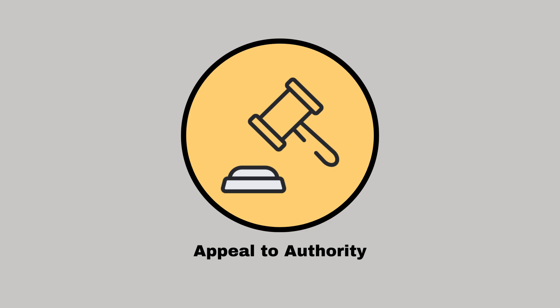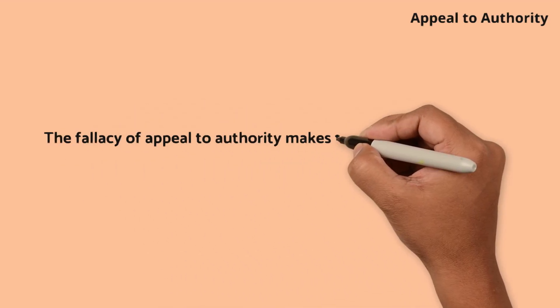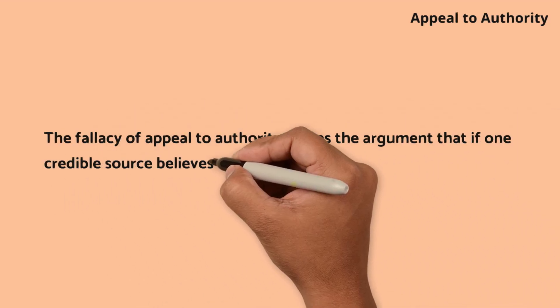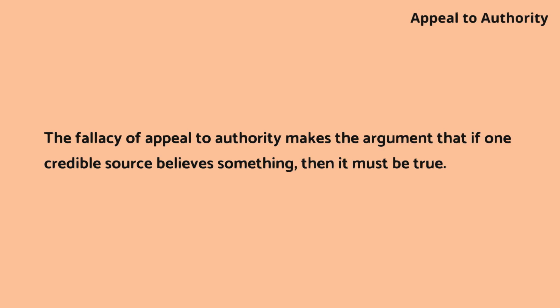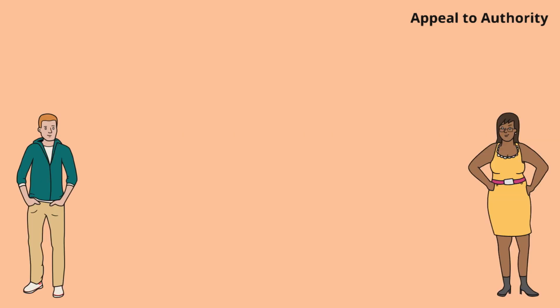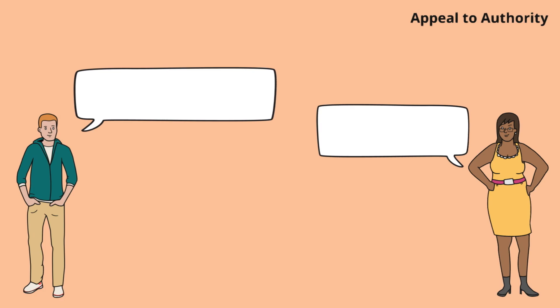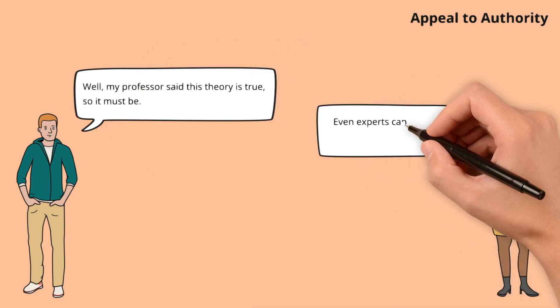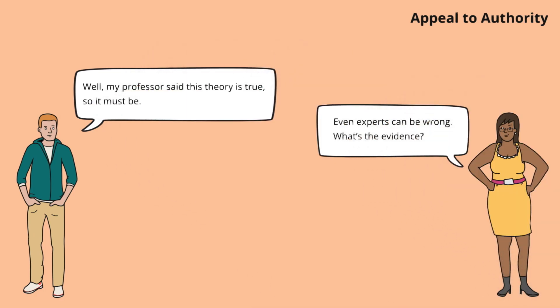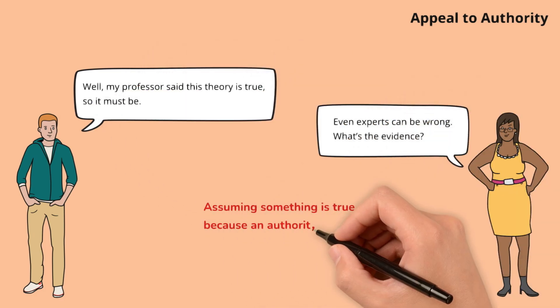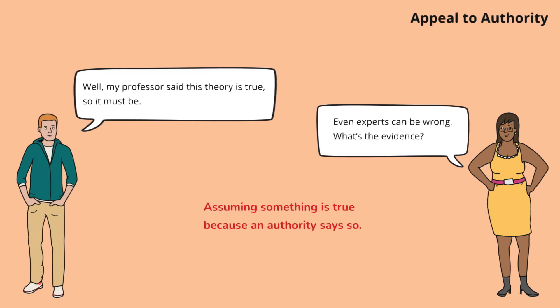Appeal to authority. The fallacy of appeal to authority makes the argument that if one credible source believes something, then it must be true. Michael believes a theory must be true simply because an authority figure said so. Sarah challenges this by reminding us that authority can be wrong and evidence is key.